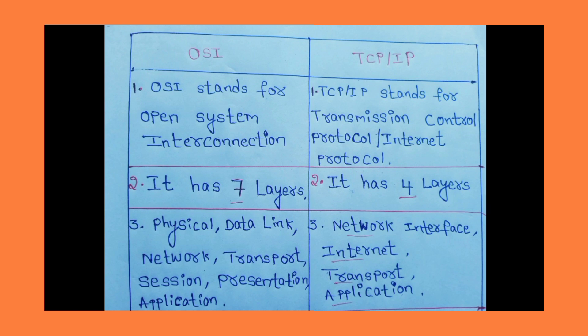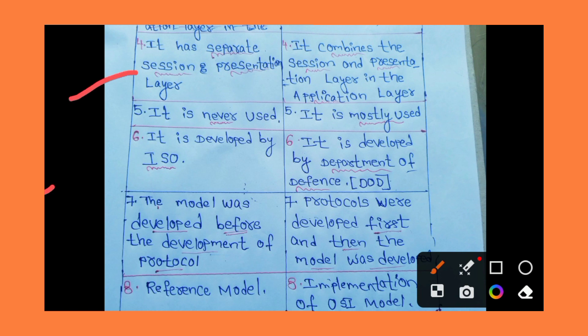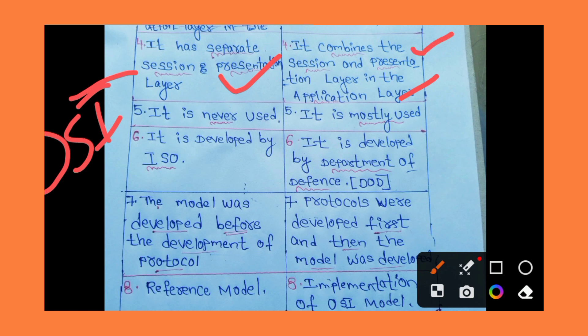In the OSI reference model, the 7th layer is the Application Layer, the 6th layer is the Session Layer, and the 5th layer is the Presentation Layer — these are separate layers. In TCP/IP, the Session and Presentation layers are combined into the Application Layer.